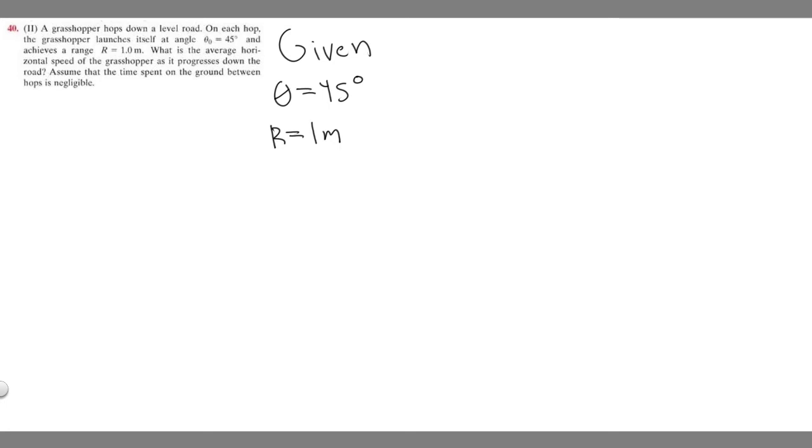And so the formula we're going to use for this is the range formula. And so if you don't know what that formula is, it's range equals u squared times the sine of 2 theta over g. And so r is going to be your range, which they give you. In some cases, it might be delta x. But in this case, they just tell you what the range is.